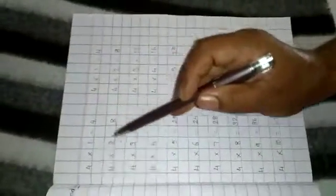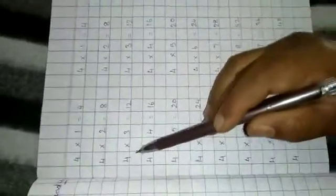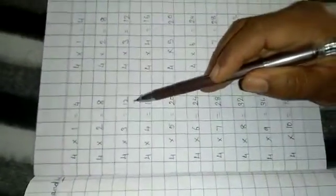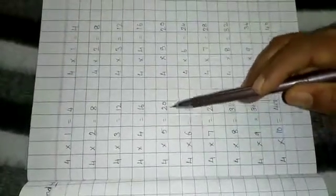Next, 4. 4 1s are 4. 4 2s are 8. 4 3s are 12. 4 4s are 16. 4 5s are 20.